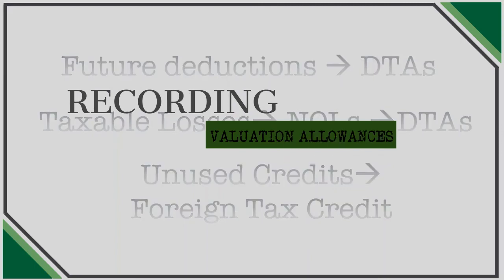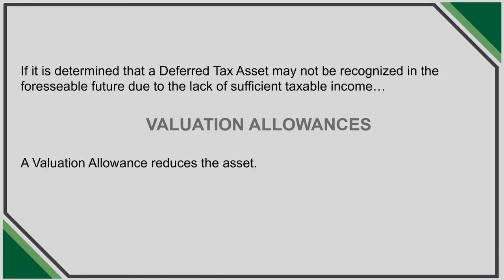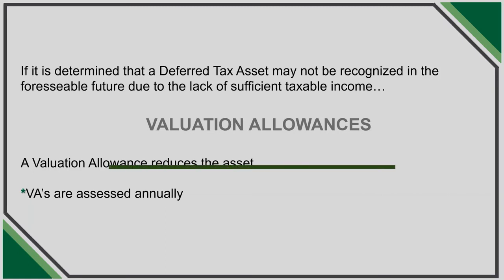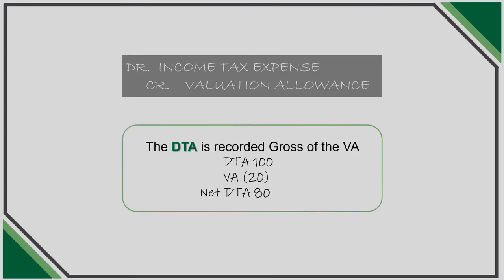If it is determined that a deferred tax asset may not be recognized, GAAP requires that a valuation allowance be recorded against the deferred tax asset. This determination is made annually and can have a significant impact on the effective tax rate of a company. When we first started discussing accounting for income taxes with deferreds, the objective was ensuring that timing differences do not sway the effective tax rate year to year — establishing a valuation on a deferred tax asset negates that. A valuation allowance is established by crediting the valuation allowance account, which is a balance sheet account, and debiting income tax expense, which means it impacts the P&L of a company.